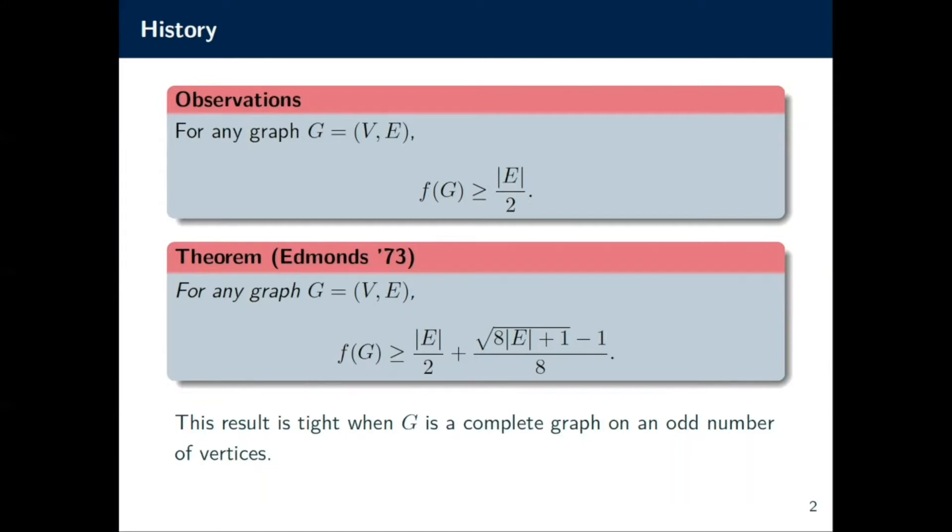The first result I want to talk about is for general G. So for general G, it's not very hard to show that every graph has an f(G) bound of |E|/2. How you show this is you take a random partitioning of the vertices and then you realize that every edge has probability 1/2 of being cut. This then proves that there must be a cut of size at least |E|/2.